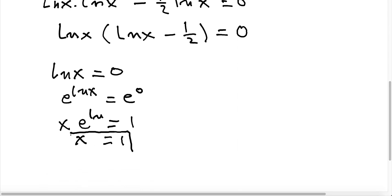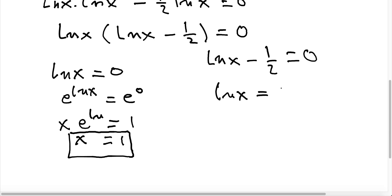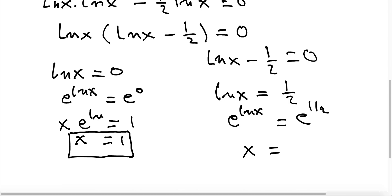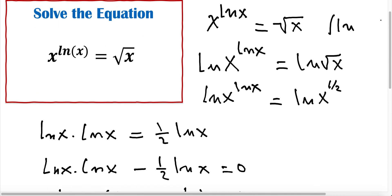The other solution: we take ln x minus 1 and a half equals 0, so ln x equals 1 and a half. Writing in exponential form, x equals e to the power of 1 and a half, which is the square root of e. So those are the two solutions: x equals 1 and x equals the square root of e.